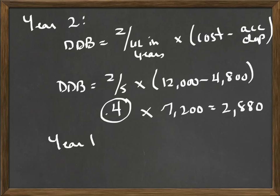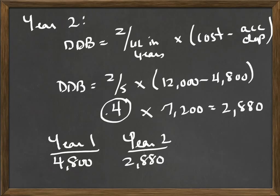Let's review. Year 1, we depreciated $4,800. Year 2, we did $2,880. So at this point, we have $7,680 in accumulated depreciation. Remember, accumulated depreciation is the sum of all years' expenses.